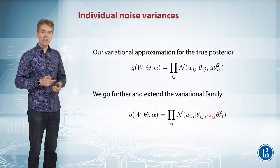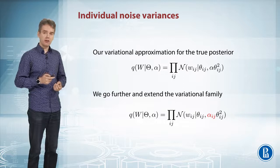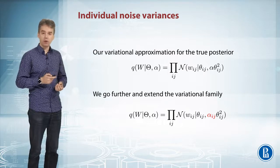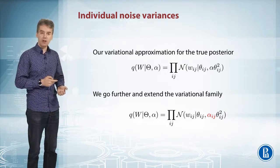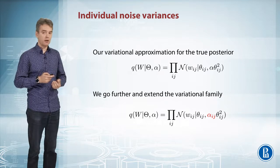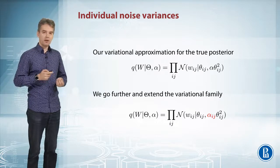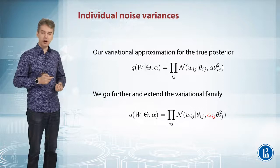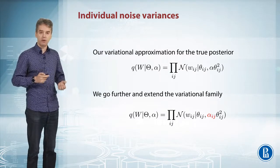Why not assign an individual dropout rate to each of the weights? This will make our approximation only tighter — we only come closer to the true posterior distribution.